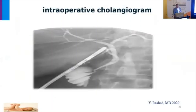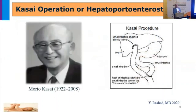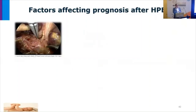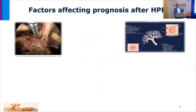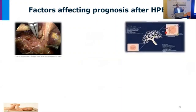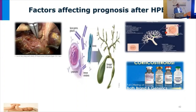This is the intraoperative cholangiogram. Management: this is Dr. Mario Kasai, who performed the first Kasai surgery. Factors affecting prognosis of biliary atresia include: timing of surgery — proper early diagnosis is very important; the remnant of bile ductules at the porta hepatis at the time of surgery; use of steroids post-operatively, which some centers employ; and recurrent ascending cholangitis, which is one of the most serious complications that can lead to failure of the Kasai operation. Finally, surgeon experience.